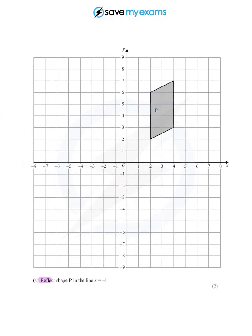We're asked to reflect shape P in the line x equals minus 1. Well, we need to draw that line first of all. x equals minus 1 is all the values for which x is minus 1, and so it's this vertical line here. Let's just straighten that up. So that is the line x equals minus 1.